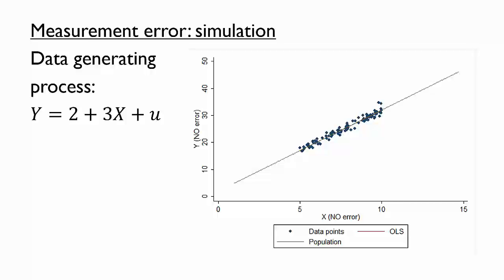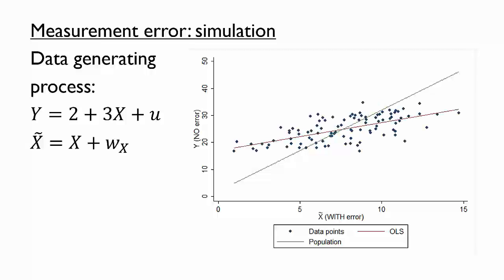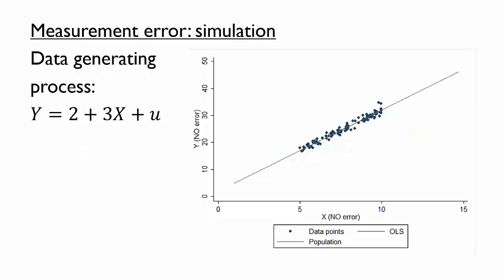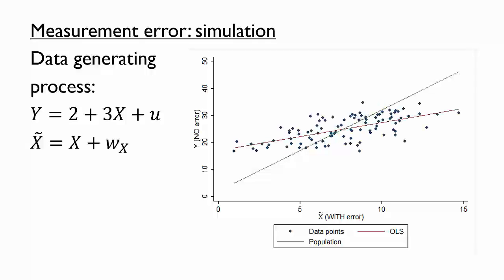The best fit line matches the population relationship quite closely as we might expect — the OLS prediction nearly overlaps the population relationship. What happens when we replace the original x with an error-prone version of x? Here is that same graph except that we use x tilde, the original x plus measurement error. Notice that the points have been shifted randomly in the horizontal direction, and in the process the best fit line has become much less steep.